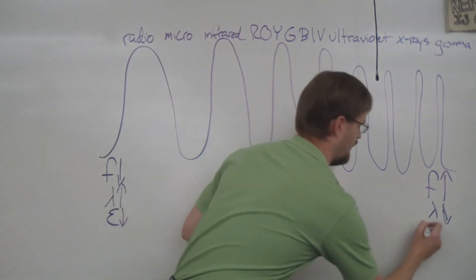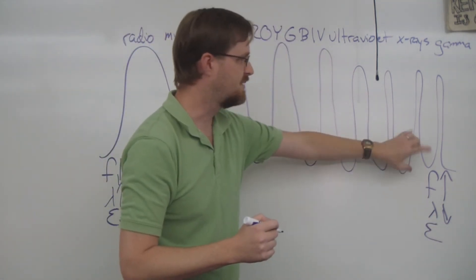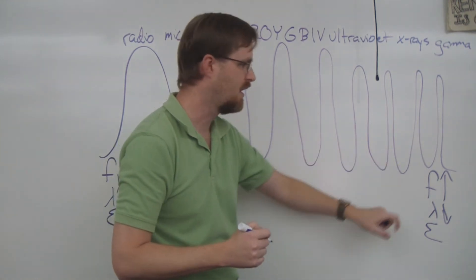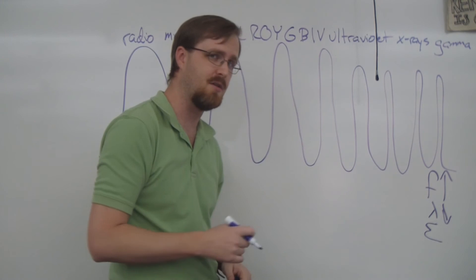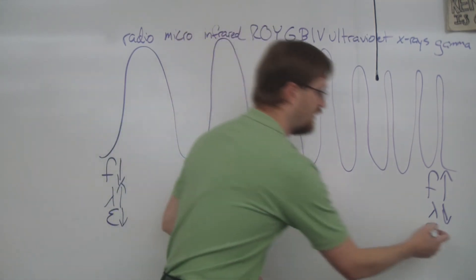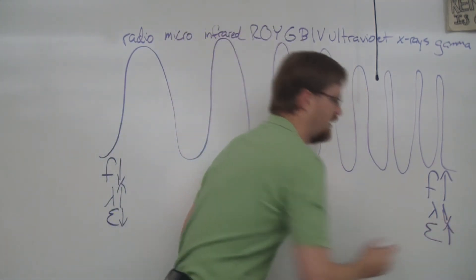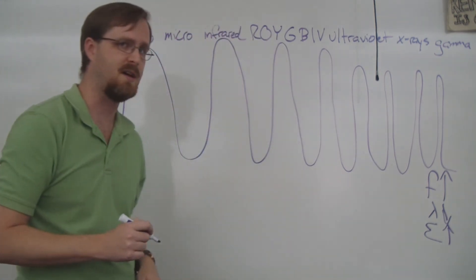Now over on the other side, as you can see, we've got frequency is pretty high, so they're moving pretty quickly. The wavelength is very short. They're really close together, so they're moving much more quickly. So you can easily understand how energy is pretty high over on that side.